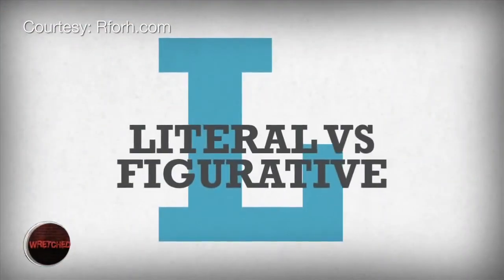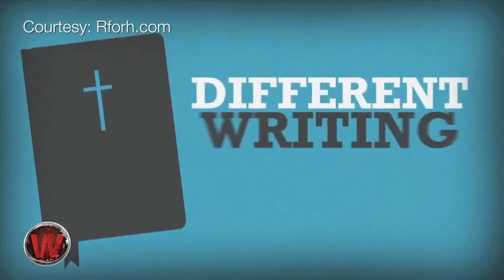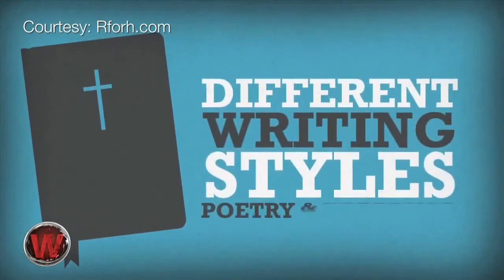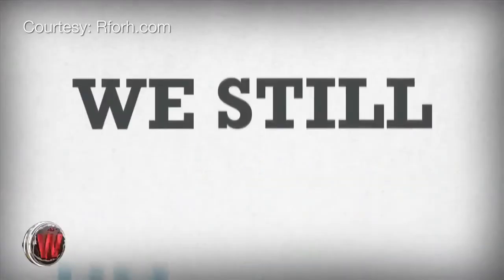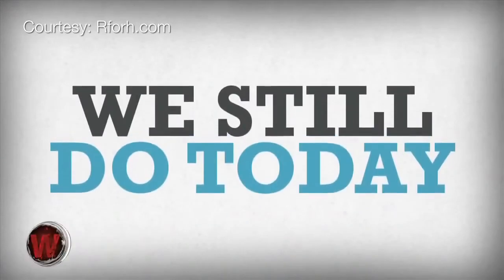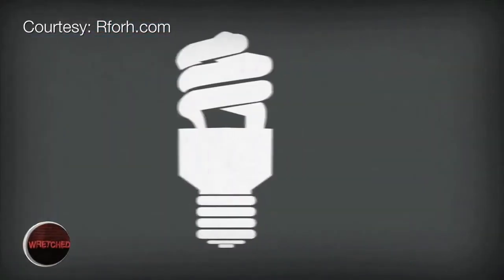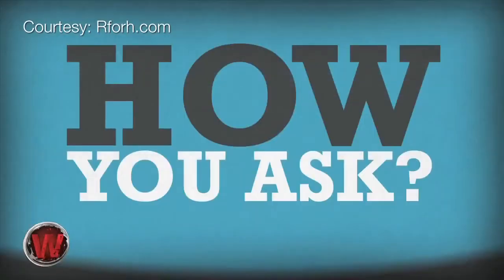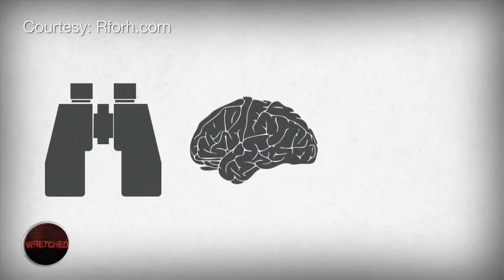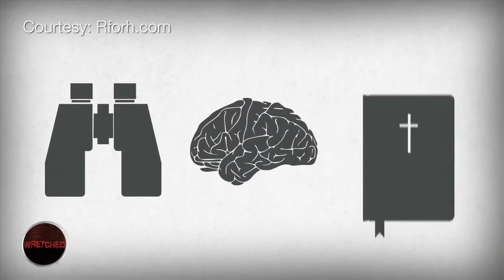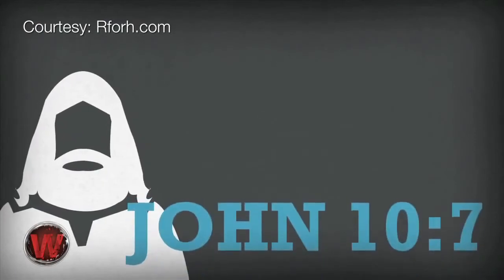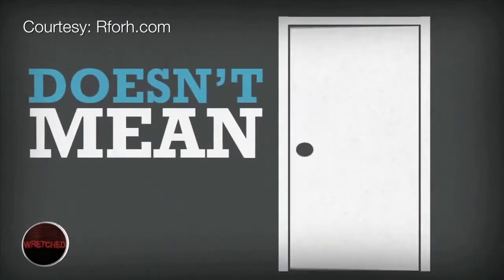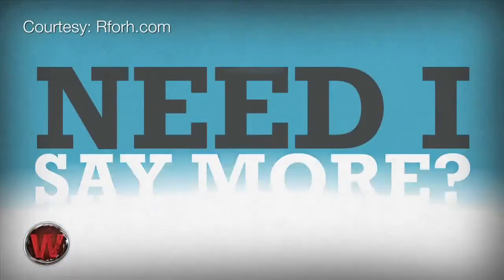L — literal versus figurative. It's pretty clear that the Bible contains different writing styles, like poetry and narrative, and uses different parts of speech like similes, metaphors, and analogies, pretty much like we still do today. So if we really want to interpret correctly, it's our job to realize and understand the difference. By looking at the immediate context, using our noggin, and comparing it with the rest of Scripture, we understand when Jesus says in John 10:7 that he is the door, he doesn't mean he's a wooden rectangle that swings on hinges.